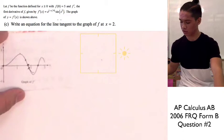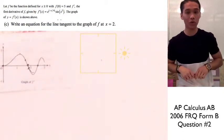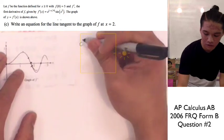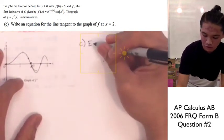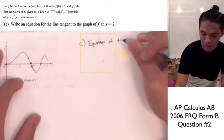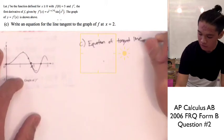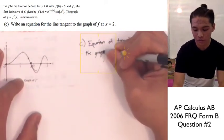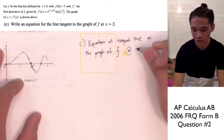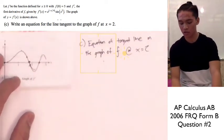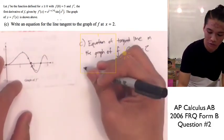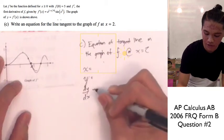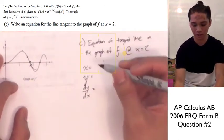Moving on to part c: write an equation for the line tangent to the graph of f at x = 2. For part c, we're looking for the equation of the tangent line on the graph of f at x = 2. To write the equation of the tangent line, we need the value of x, the value of y, and the value of our slope, which is dy/dx. The value of x is given in the problem: x = 2.